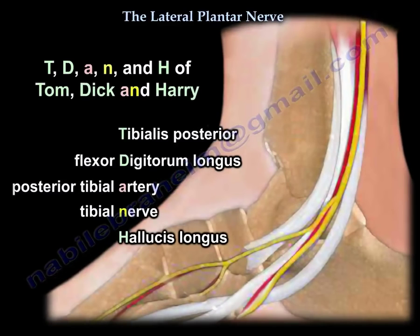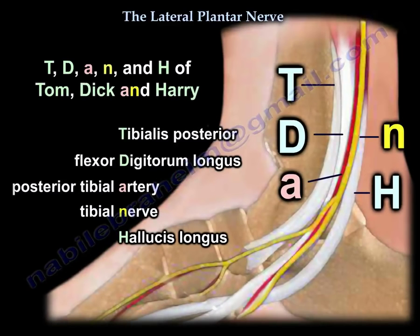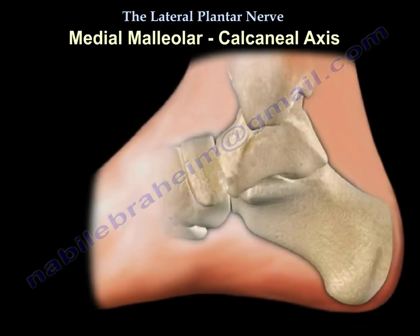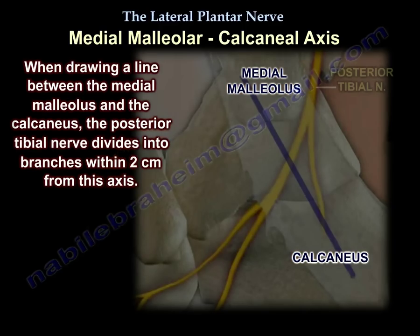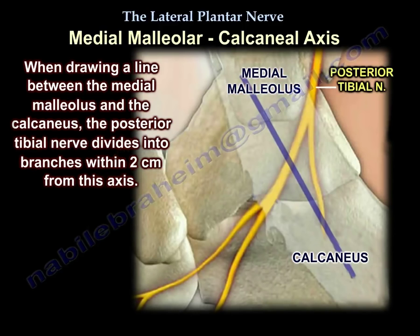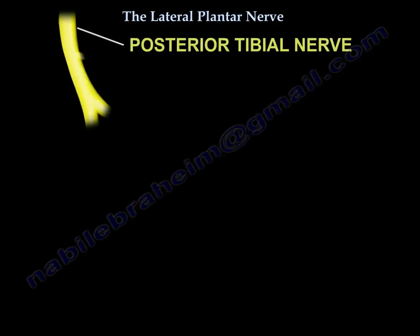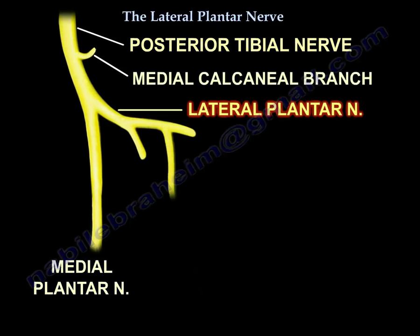We are all familiar with the arrangement of the tendons, nerves, and vessels in this area — we call it Tom, Dick, and Harry. From our research, if you draw a line between the medial malleolus and the calcaneus — the medial malleolus-calcaneal axis — we found that the posterior tibial nerve divides into its branches within two centimeters from this axis, yielding the medial plantar nerve and the lateral plantar nerve.